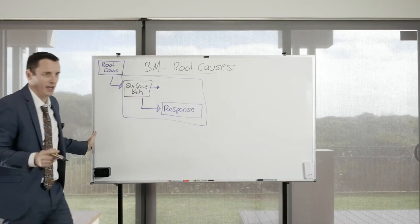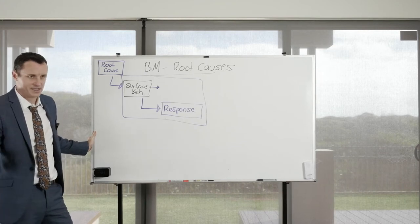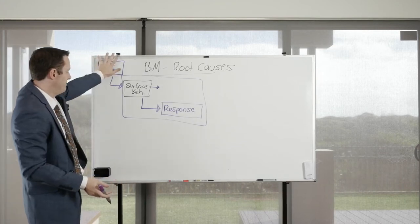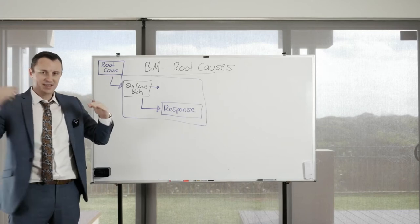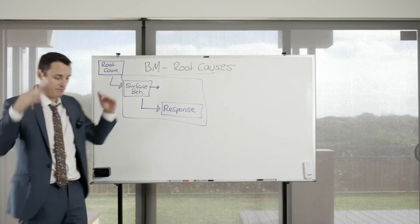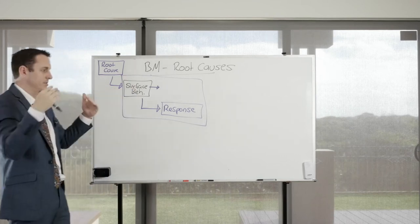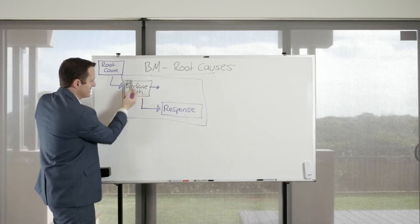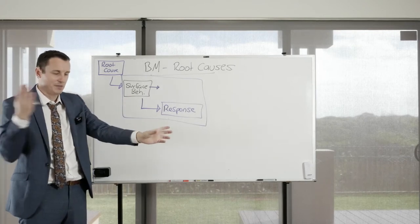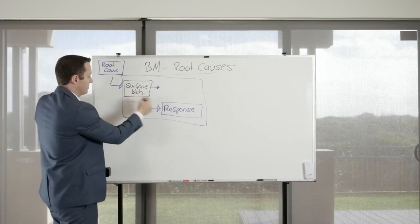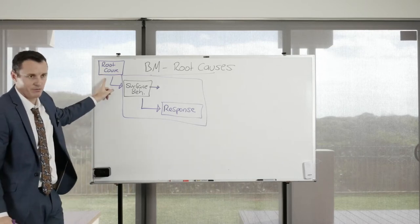Standard behaviour management textbooks tend to match behaviours with appropriate responses — that's the escalation approach, which looks at the surface behaviour and applies minimum necessary force to stop it. That's responding directly to what we observe, usually immediately, and generally doesn't take into account root causes. If you're only in a class for a short time, going deeper can be harder, but if you have students for a whole term, you definitely want to look at root causes as often as possible.